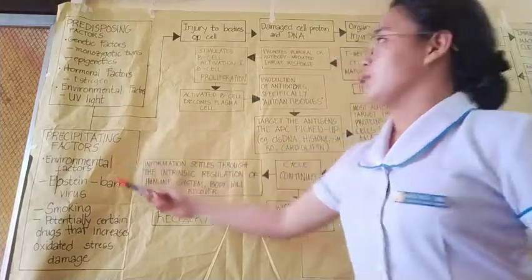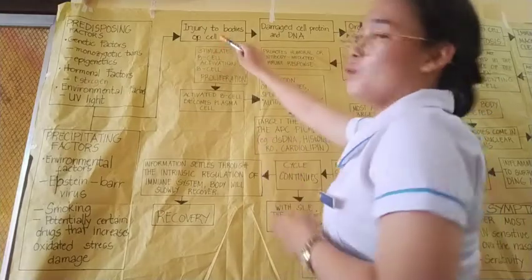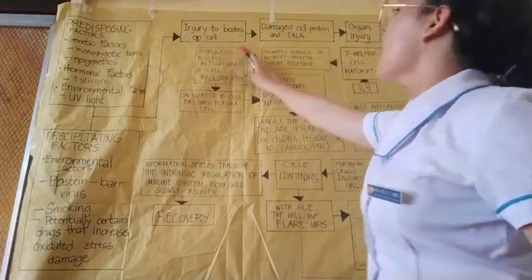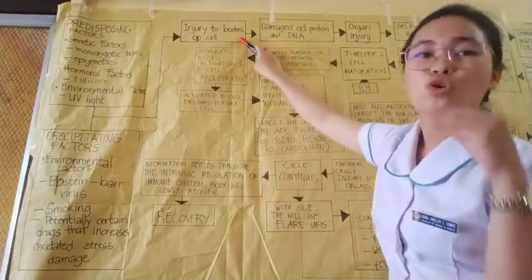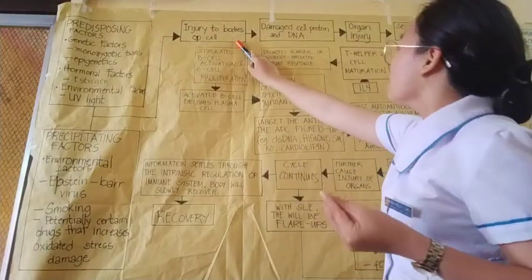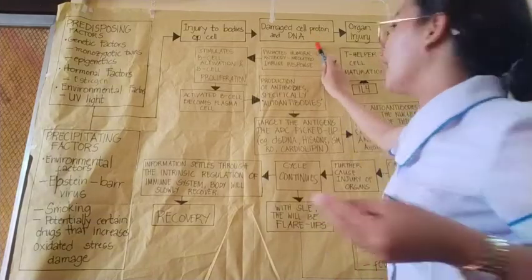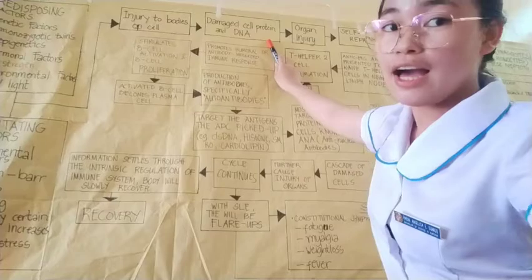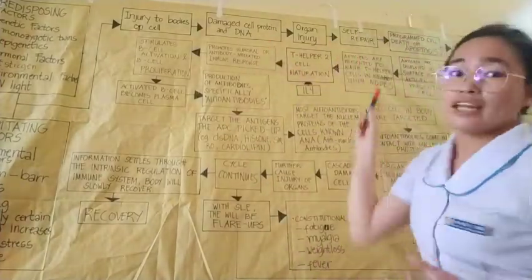With all these factors, something will happen to your cells — there will be injury to the body's cells. That cell injury will penetrate into the components of a single cell. There will be damaged cell protein and DNA. As the damage spreads, there will be organ injury, because an organ consists of many cells.